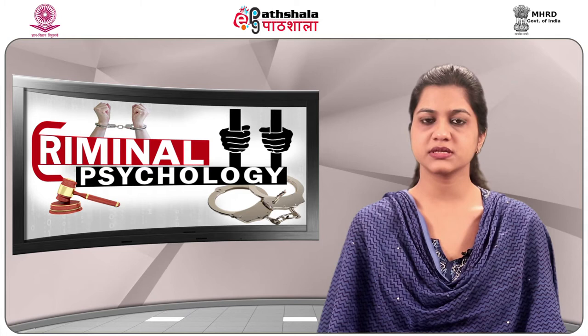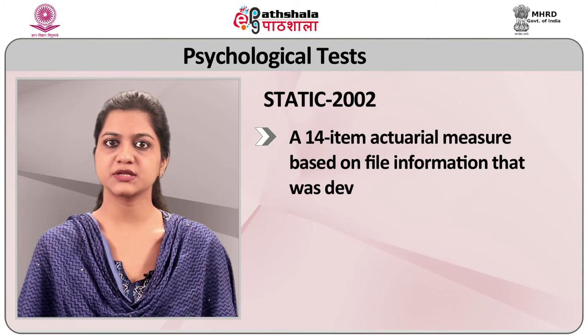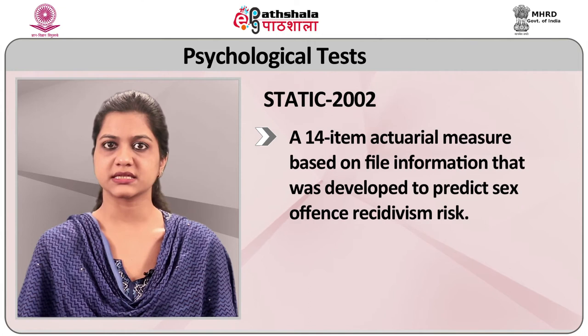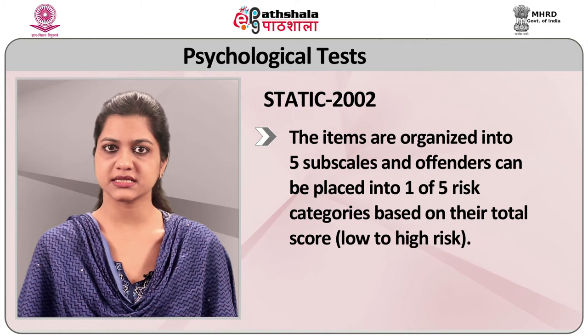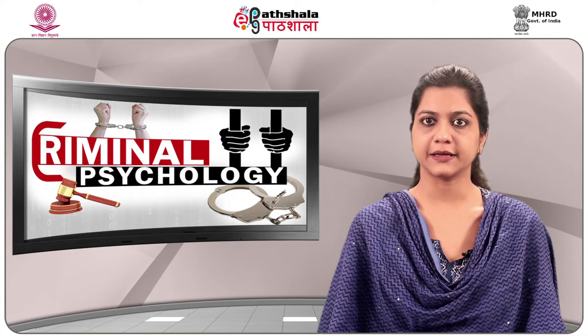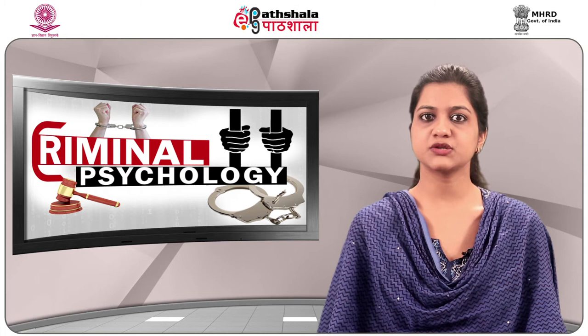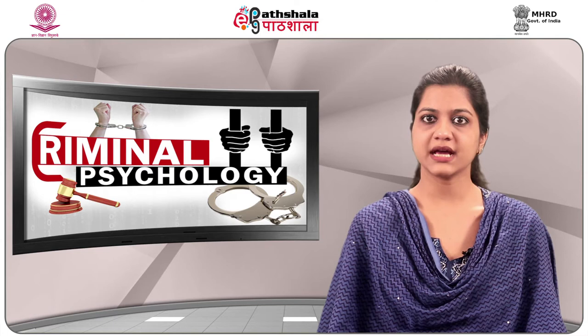STATIC-2002 is a 14-item measure based on file information that was developed to predict sex offence and rape risk. The items are organized into 5 subscales, and offenders can be placed into 1 to 5 risk categories based on their total score (low to high risk). Research indicates that it is more accurate than STATIC-99 and evidences moderate ability to rank-order the risk for sexual, violent, and general recidivism for contact offenders only.